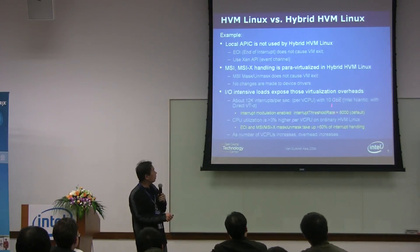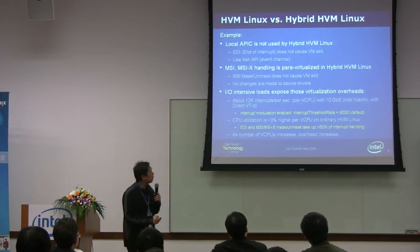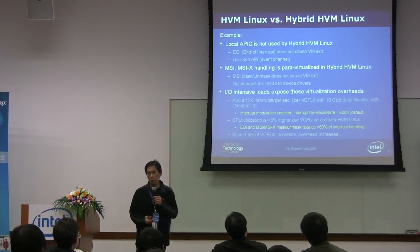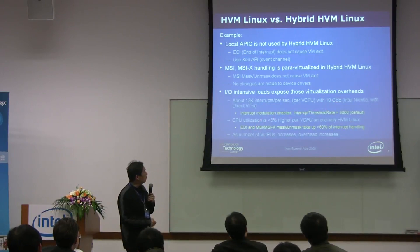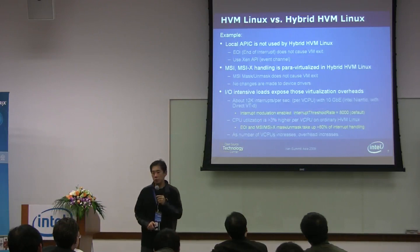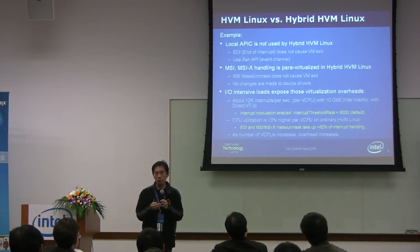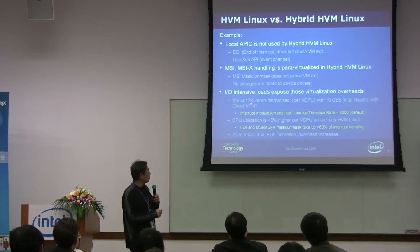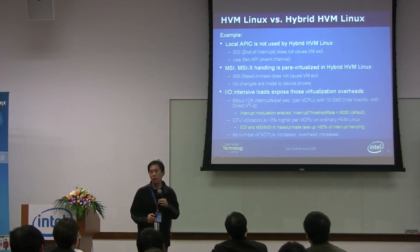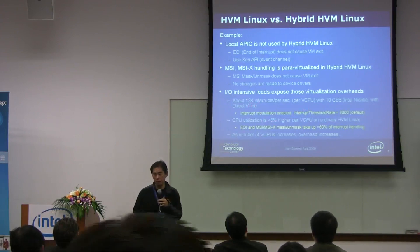For example, this Niantic — the number of interrupts per second is something like 10K. This is based on calculation. These cards typically have interrupt modulation; basically they can batch interrupts into one. So even this is an optimized number of interrupts.